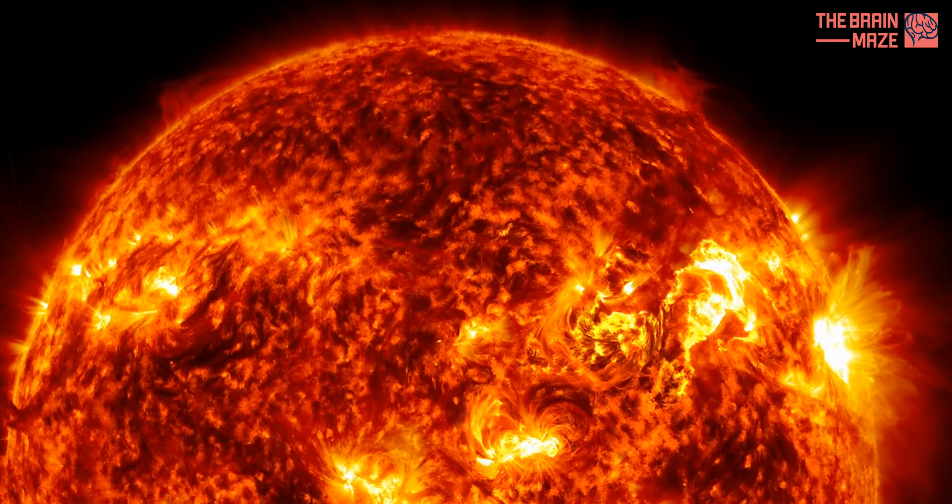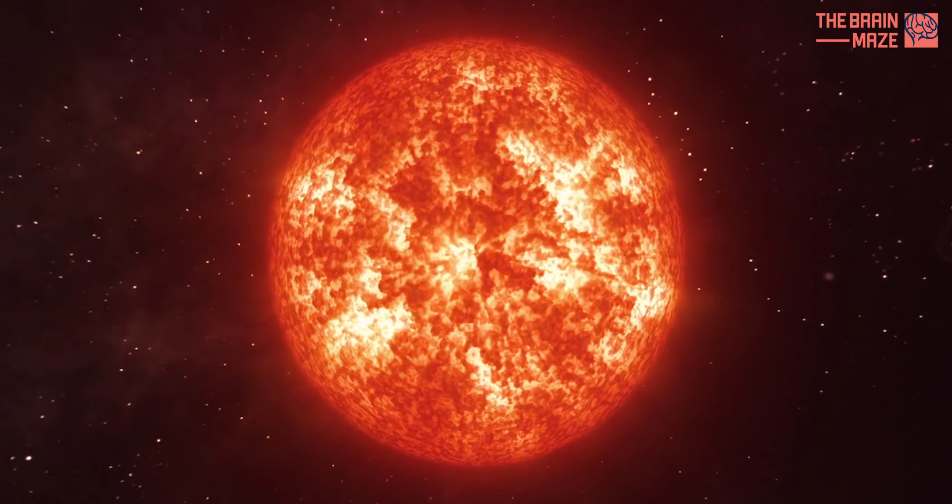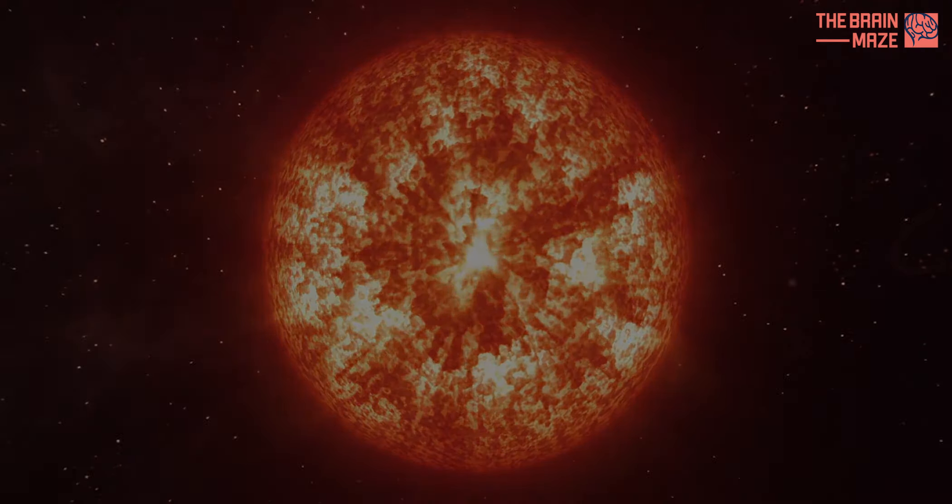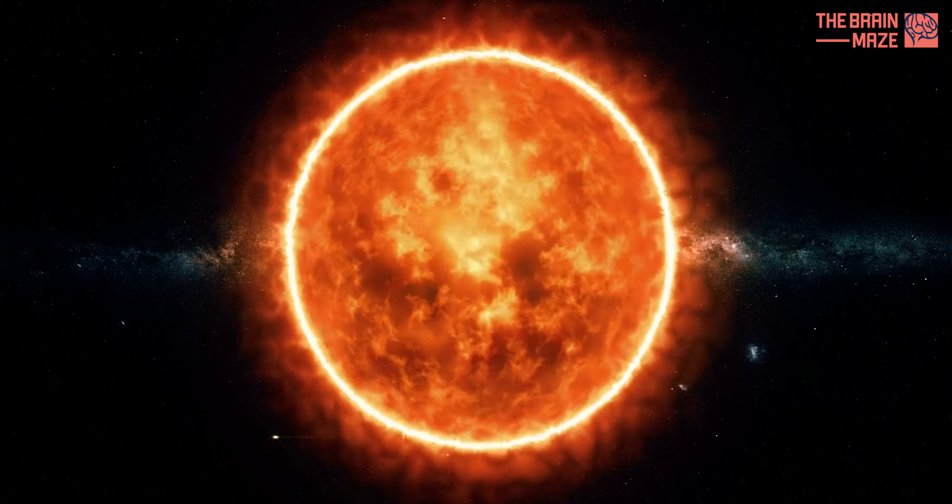The biggest: UY Scuti. Imagine a star so big you could fit dozens of suns inside it. That's UY Scuti, a red supergiant located near the center of our Milky Way galaxy.